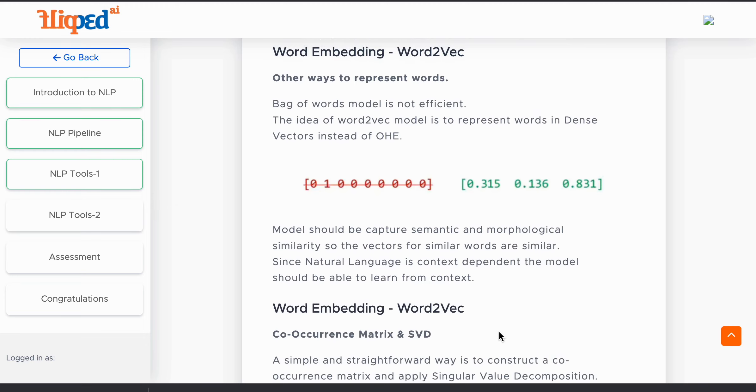Word2Vec is another way to represent words. Why do we go for Word2Vec? Word2Vec is actually much more efficient than one-hot encoding. One-hot encoding doesn't help us to find the similarities, but Word2Vec helps us to find the similarities.